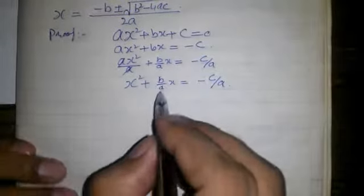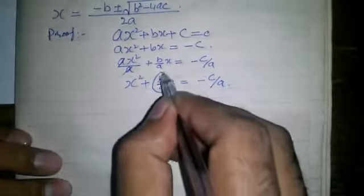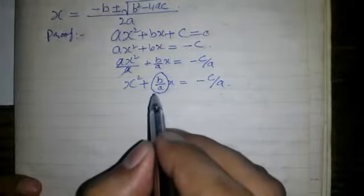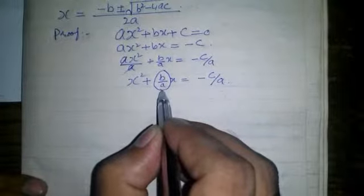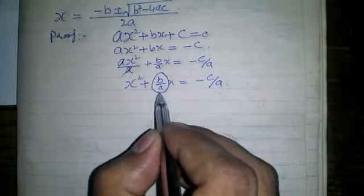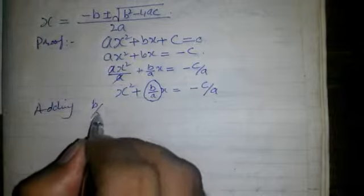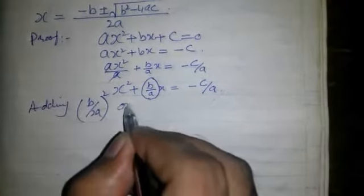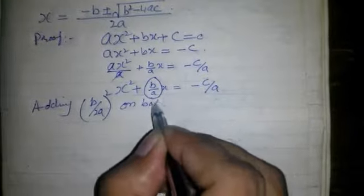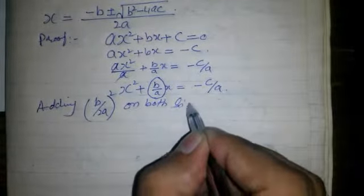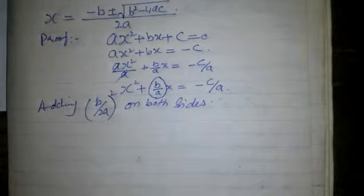Now we are going to consider this term. We add half of this term squared on both sides, adding (B/2A)² on both sides.